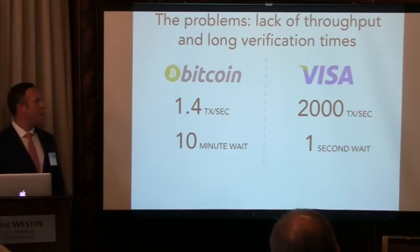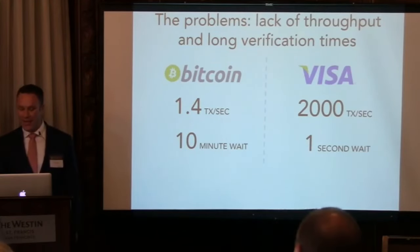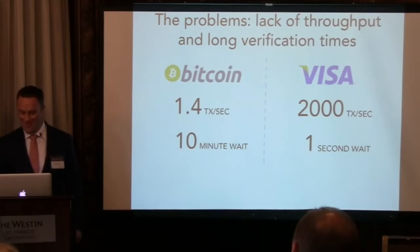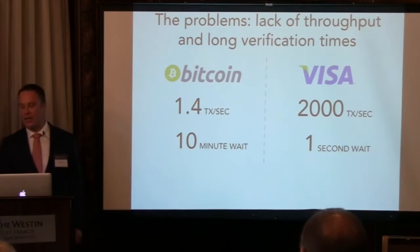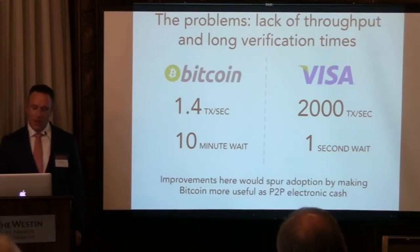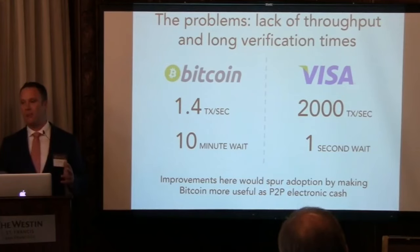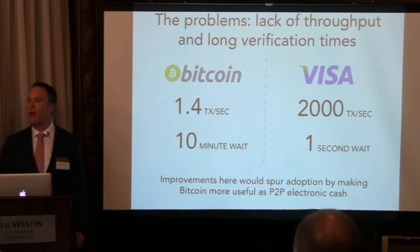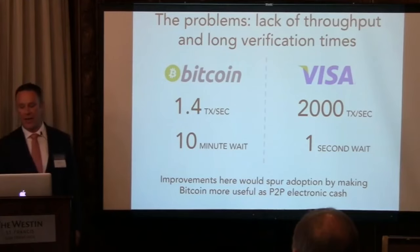If we compare that to the gold standard payments system, Visa, we see that Visa is significantly better. Visa processes much more transactions per second. And with chip and pin technologies, merchants need only about a second to receive verification from Visa. So I think improvements to Bitcoin on these two performance metrics would help spur adoption by making Bitcoin more useful as a cash-like payment system.